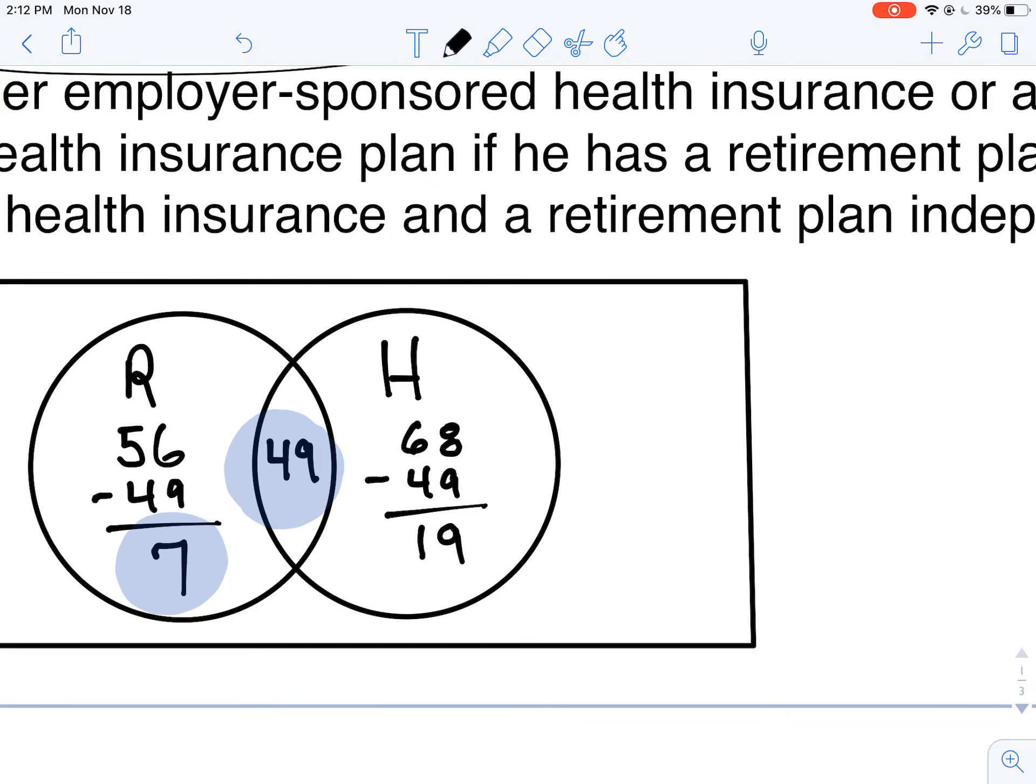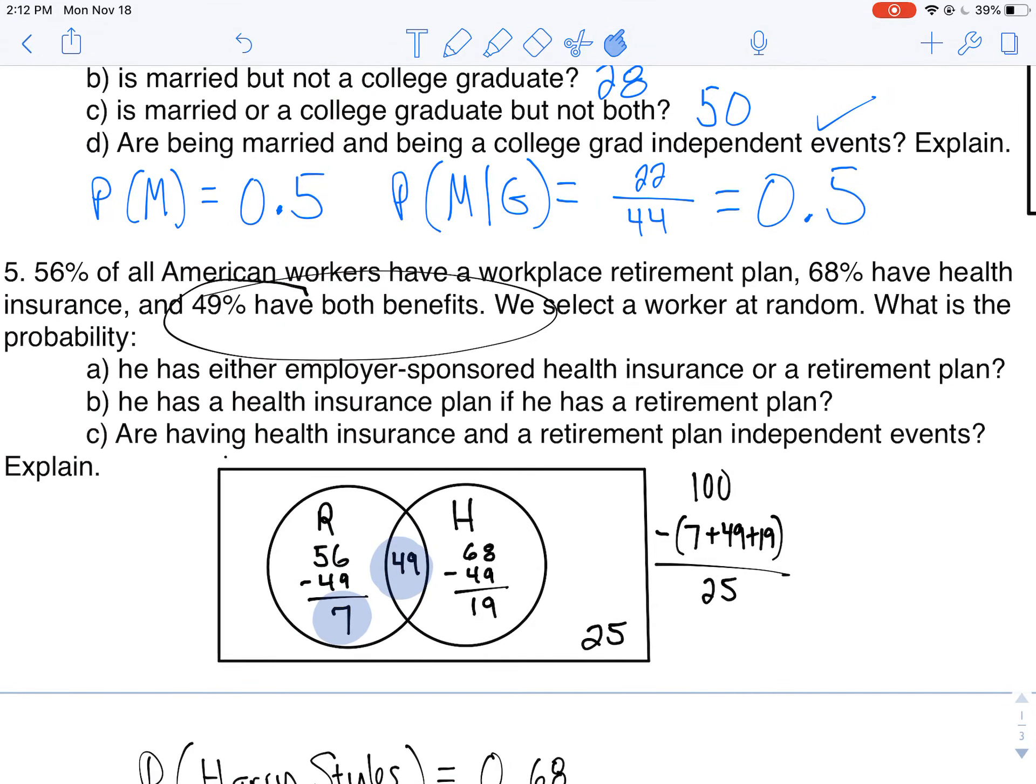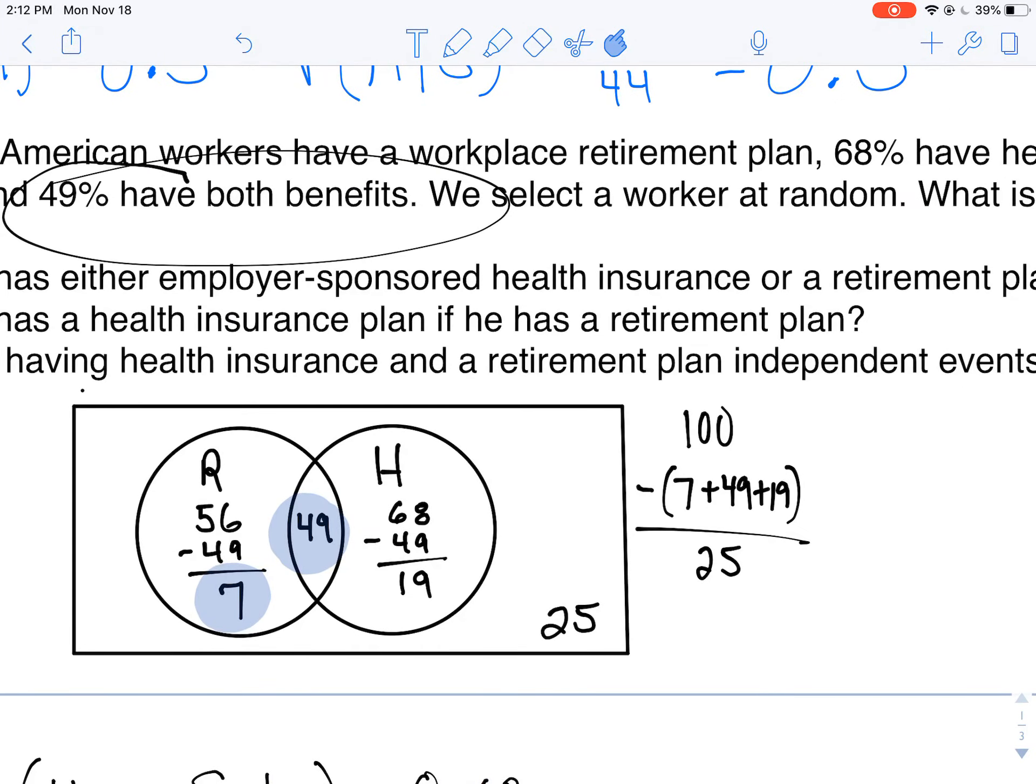Now what I like to do is figure out what's gonna go on the outside here. So I know I should get all this adding up to a hundred. I'm gonna take away the 7, the 49, and the 19, everything in my circles. Which gives me 25. I'm actually gonna plug it in: 100 minus 7 minus 49 minus 19 equals 25. That tells me that 25% of those within this sample don't have health insurance or retirement. So now I've filled in the Venn diagram.